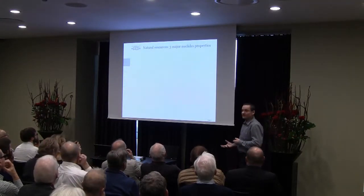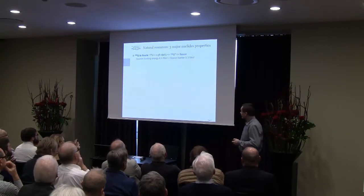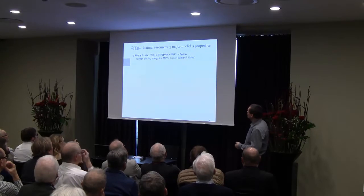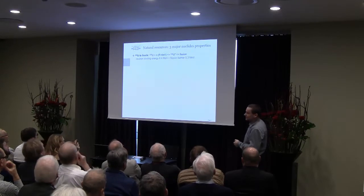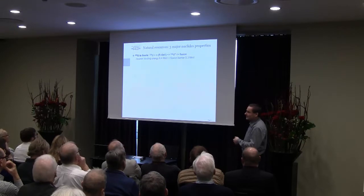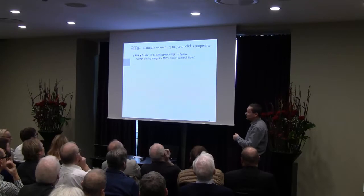We have three major isotopes as natural resources. Looking at them from a particle physics point of view, we have uranium-235 — we call it the family uranium-5. It is fissile because the binding energy of the neutron when it interacts is higher than the fission barrier, so you can create excited nuclei which then fission.